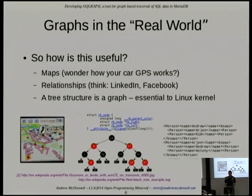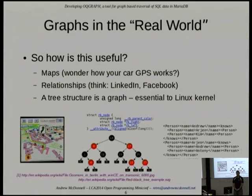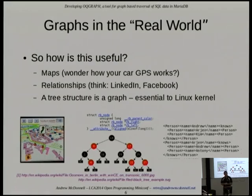Graph theory is useful in the real world for various problems — I've mentioned maps. Underlying LinkedIn, Facebook, and other social media is a lot of graph manipulation. Even in the Linux kernel, trees are used everywhere for all sorts of things. And a tree is a graph, so you can use these algorithms to deal with that.